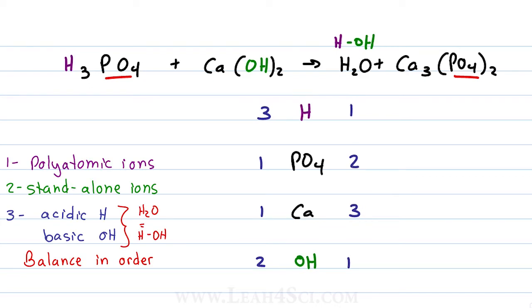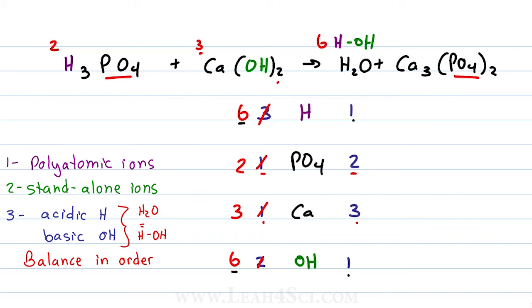Let's start with the non-water anion and cation first. We have a 1-to-2 ratio for phosphates in reactants and products, so let's double the phosphates in the reactants by placing a 2 in front of phosphoric acid. That doubles my acidic protons from 3 to 6 and gives me 2 phosphates. I have a 1-to-3 calcium ratio in reactants and products, so let's triple the reactants by placing a 3 in front of calcium hydroxide. Updating all the numbers: that gives me 3 calcium and 3 × 2 = 6 hydroxides.